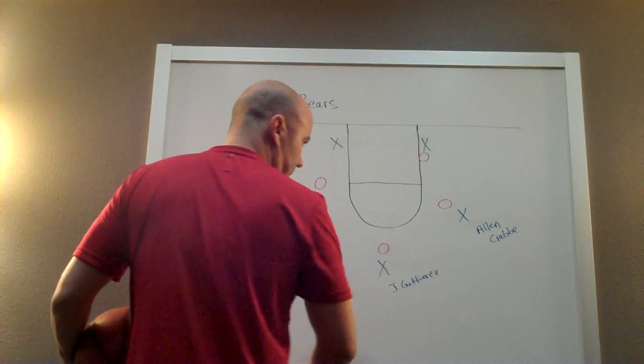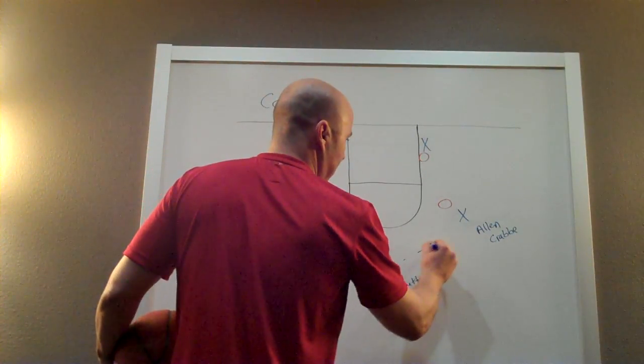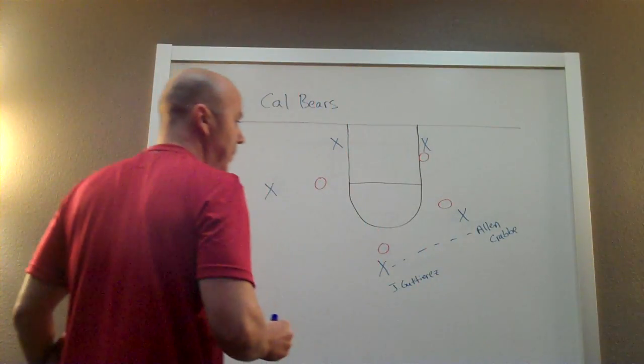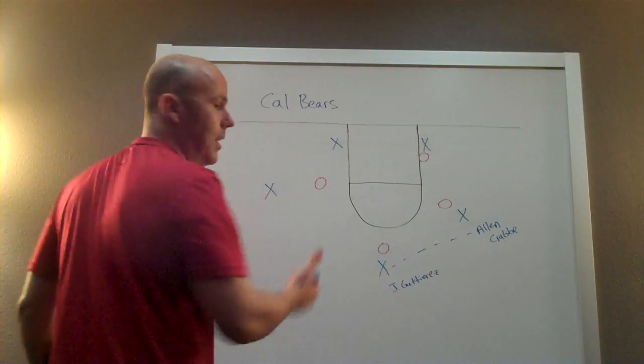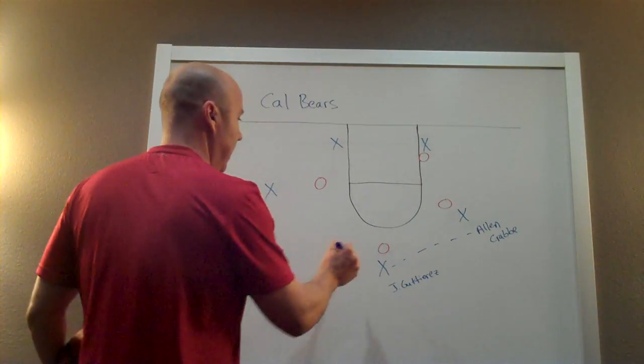So what's going to happen here is as Gutierrez passes the ball over to Alan Crabb, in a typical flex offense, Gutierrez will pass and then screen away. Not this time. He's going to fake and then cut right down the key.